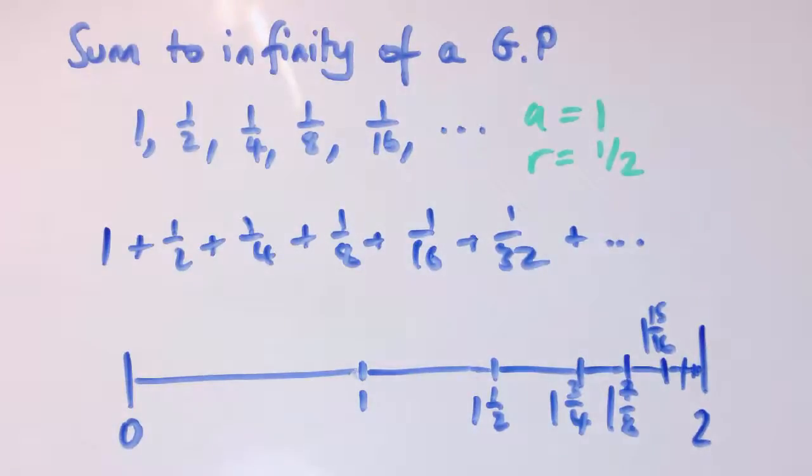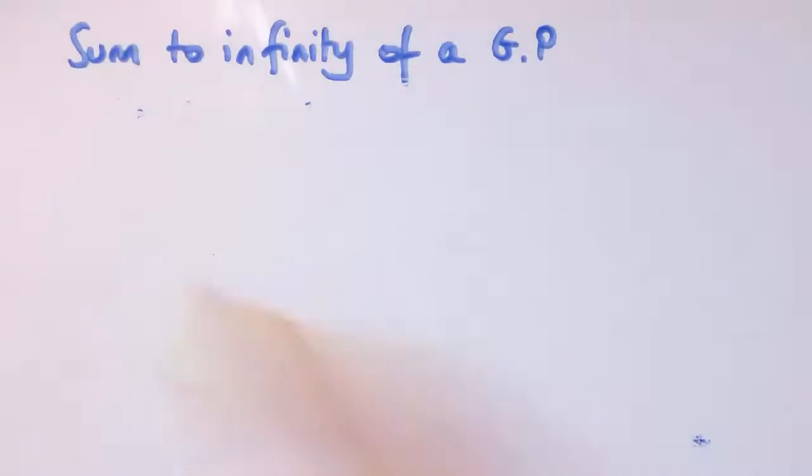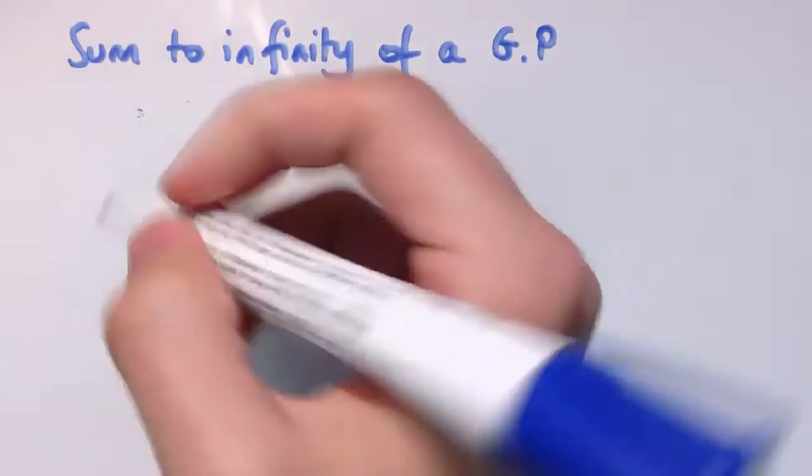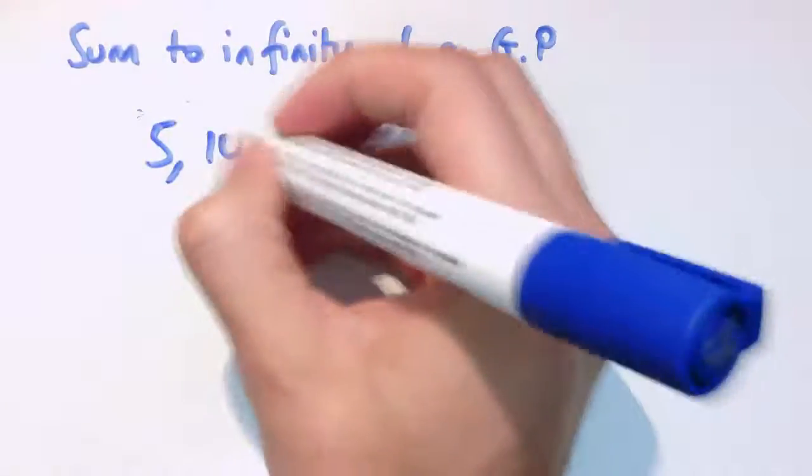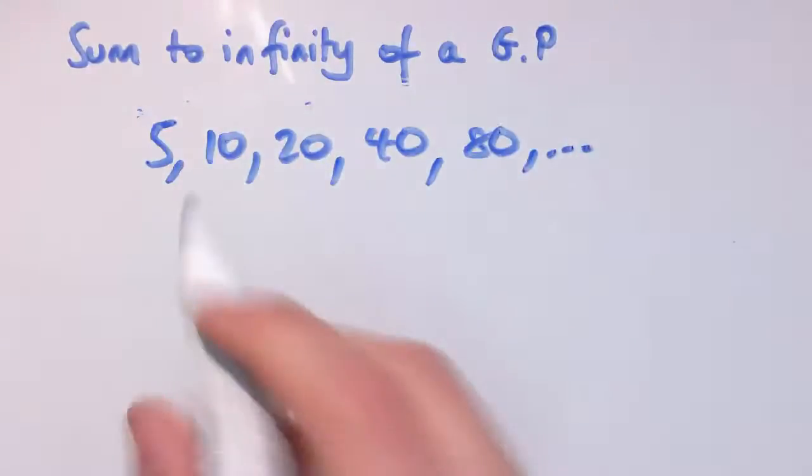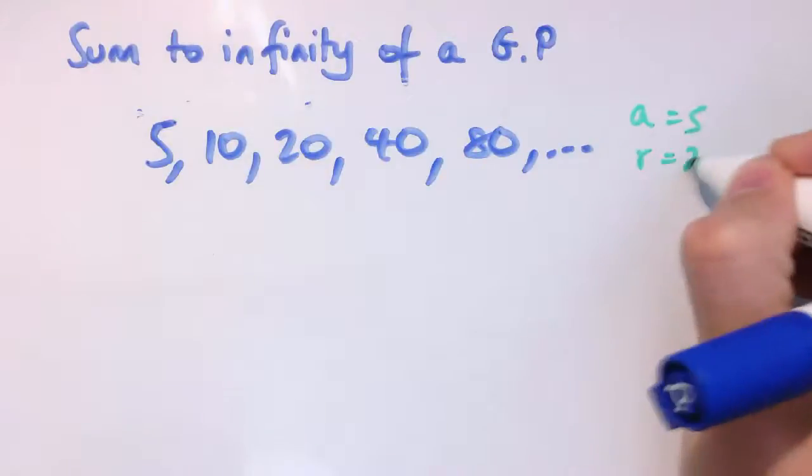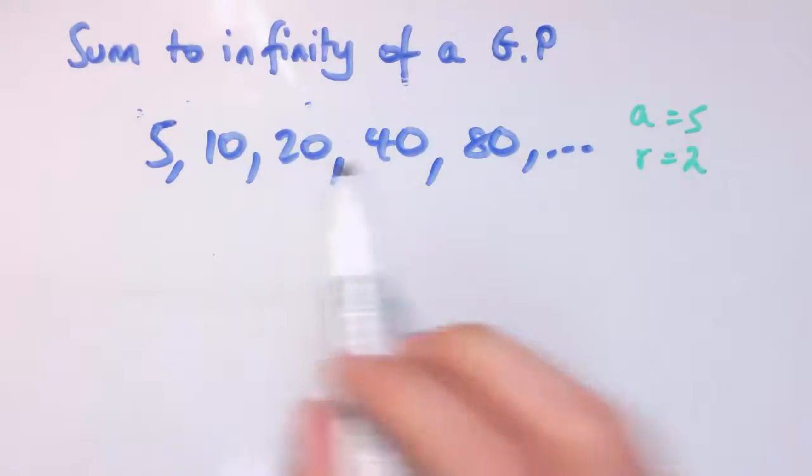Now, one important thing to notice here is that not all geometric progressions have sums to infinity. For example, if I took a geometric progression like 5, 10, 20, 40, 80, etc., so this one's got a equals 5 and r equals 2, then as I add these together, the numbers are getting bigger and bigger, so the sum just gets bigger and bigger. The sum to infinity is huge, because the terms just get larger and larger.